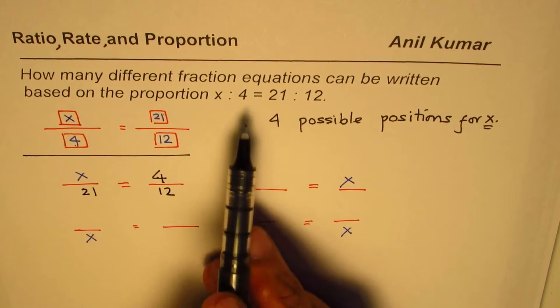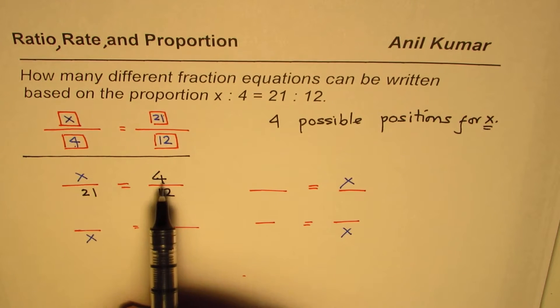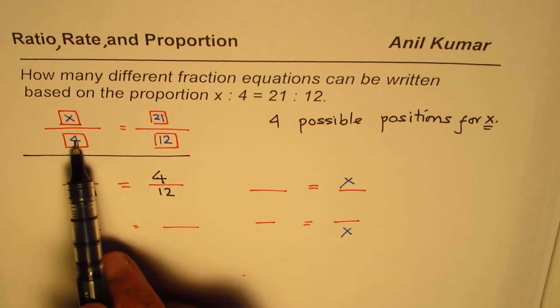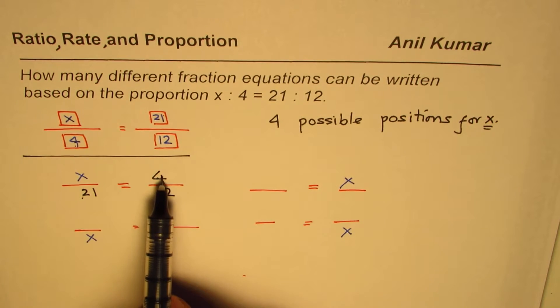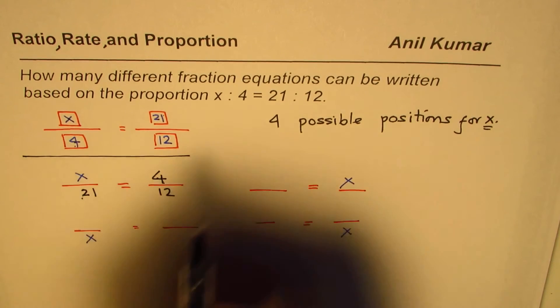So the same proportion could be written in this way. So basically, what we see here is that this number 4 has two different positions. It could be placed here or there. It could be denominator on the left side or numerator on the right side. So 4 has two possible situations.